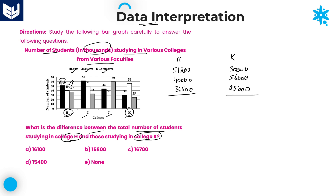Now add the individual values and then subtract. For college H: units place 0, tens place 0, hundreds place 2+5=7, then 1+6=7, then 5+4=9, and 9+3=12. So college H total is 1,27,700. For college K: units and tens and hundreds places are 0; thousands place 6+5=11, carry 1; 3+5=8, plus carry gives total 1,11,000.